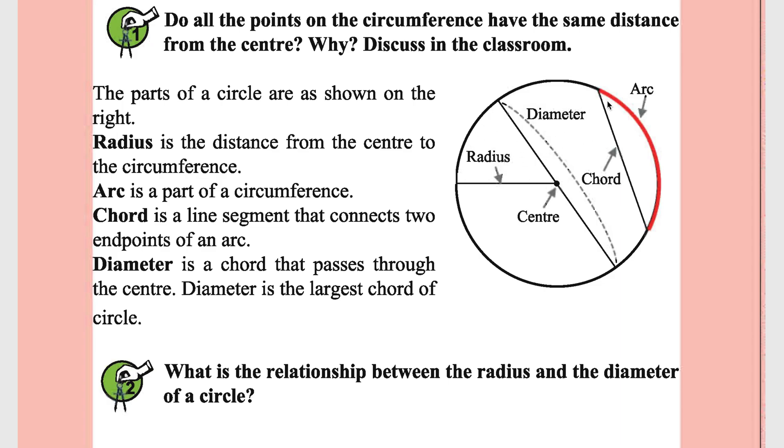Arc is part of the circumference. For example, this one is an arc. A chord is a line segment that connects two endpoints of an arc. For example, this is a chord.